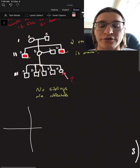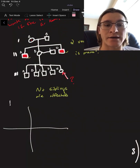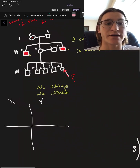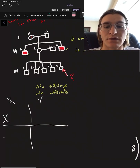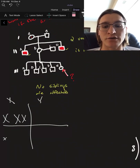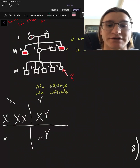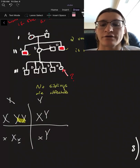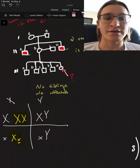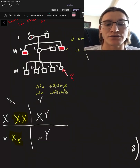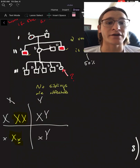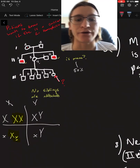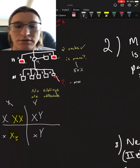To confirm the grandma's carrier status: the grandpa must be X and Y because he is not a carrier of Hemophilia A. The grandma must be big X, little x because she passed it down to two of her sons. There is a 50% chance of passing Hemophilia A to a son or making a daughter a carrier. So the grandma has to be a carrier.